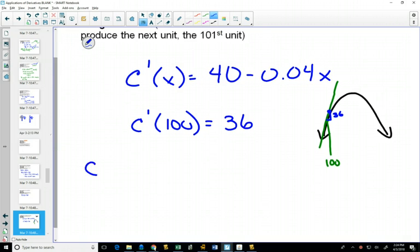Well, if I put 101 into my cost function, it'll tell me exactly how much I pay for 101 units. And if I put 100 into my cost function, it'll tell me how much I paid to produce 100 of them. And if I subtract those two numbers...